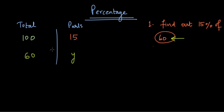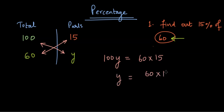And now we need to find out y from here. Once you arrange the numbers like this, you just simply need to cross multiply and equate this. So if you cross multiply, you get 100y is equal to 60 times 15. And from here, y becomes 60 times 15 divided by 100 and that is equal to 9. And therefore, 9 is 15% of 60.